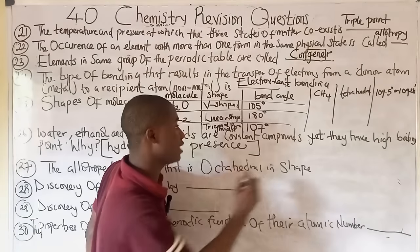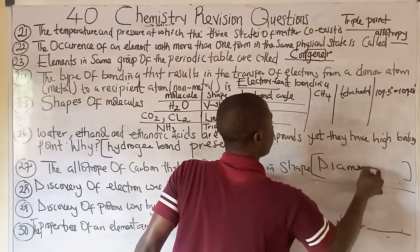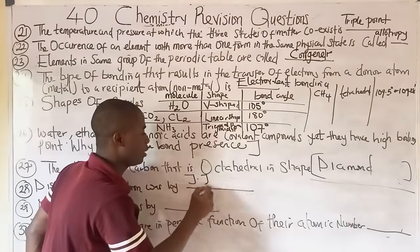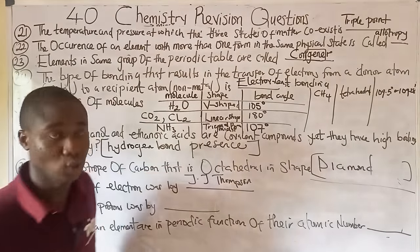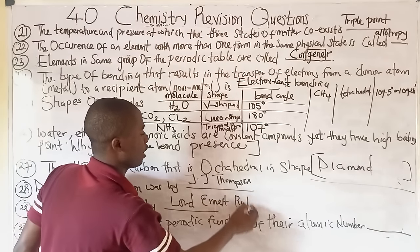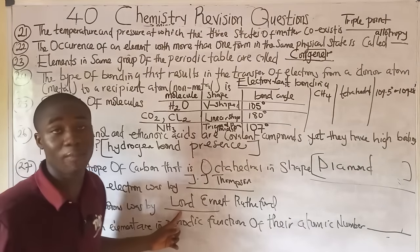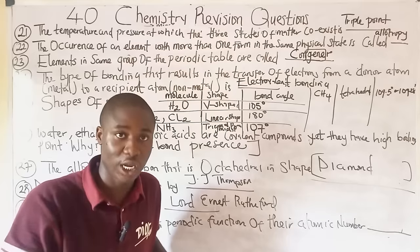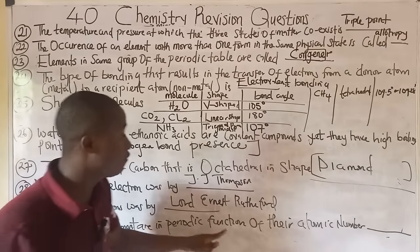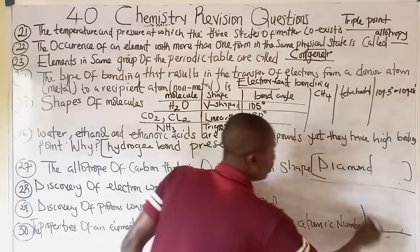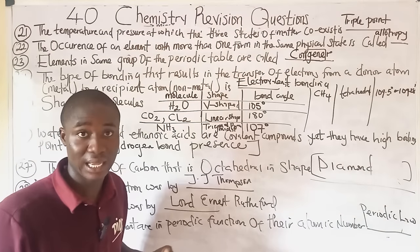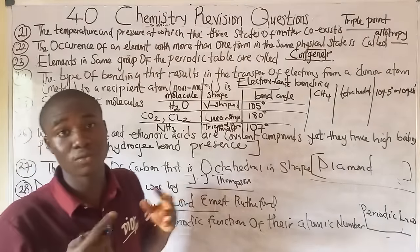Question twenty-seven: the allotrope of carbon that is octahedral in shape is diamond. Graphite is hexagonal in shape. Question twenty-eight: the discovery of electrons was by JJ Thomson. Question twenty-nine: the discovery of protons was by Lord Ernest Rutherford. Question thirty: the properties of elements being a periodic function of their atomic number is the periodic law, stated by Henry Moseley.